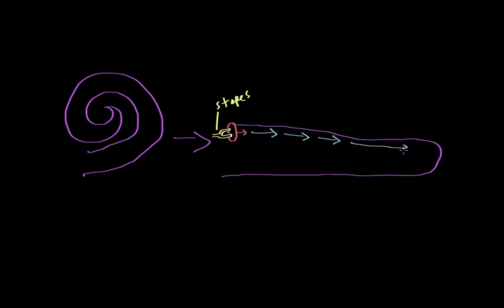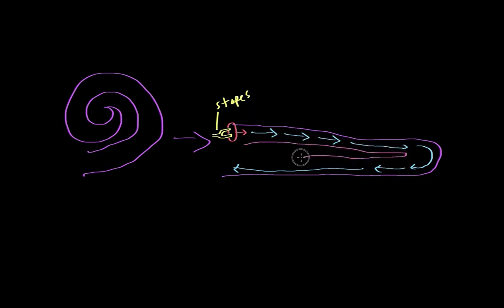That fluid gets pushed all the way around the cochlea and comes back around. The reason the fluid flows in this direction is because there's a structure right in the middle called the organ of Corti, which splits the cochlea in two so the fluid can only flow in one direction. When the fluid gets to the other side, there's a little round window called the circular window, which gets pushed out as the fluid compresses it.